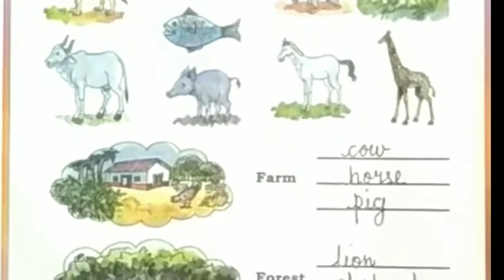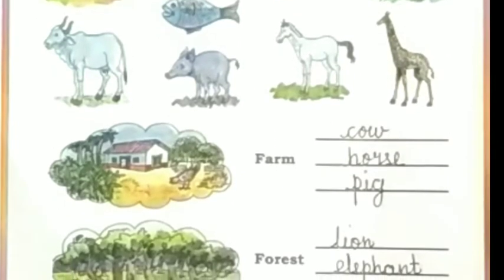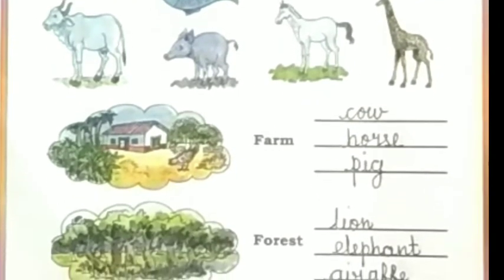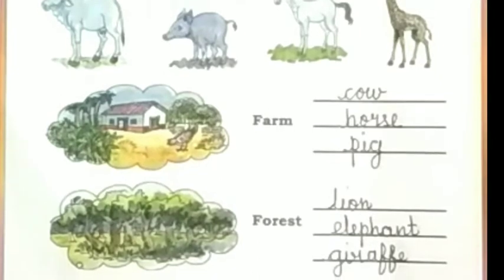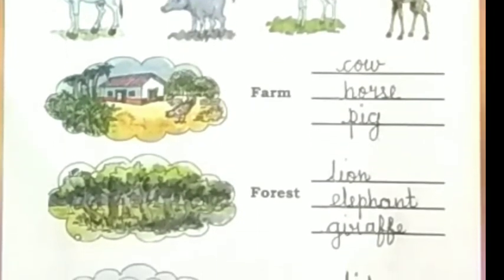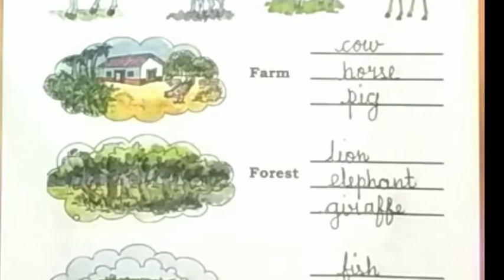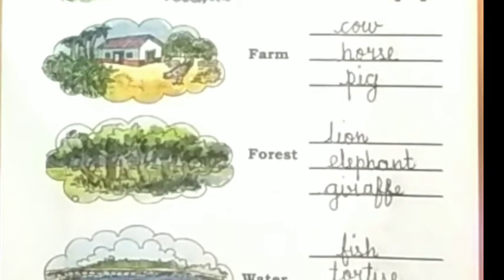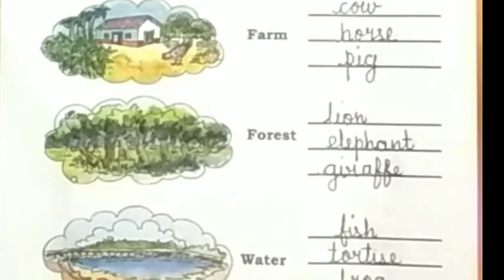Now we will identify forest animals: lion, elephant, giraffe. Again we will identify water animals: fish, tortoise, frog.